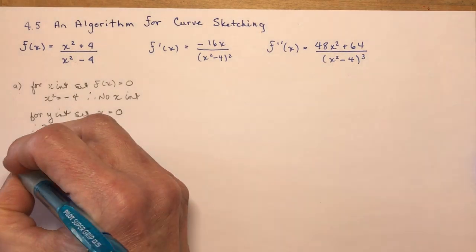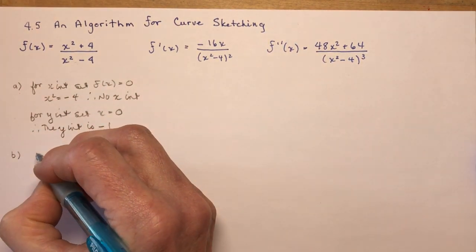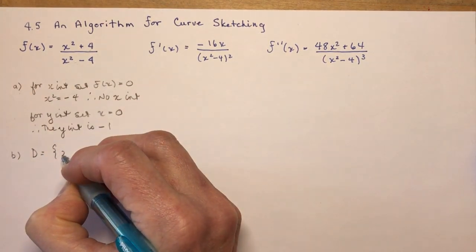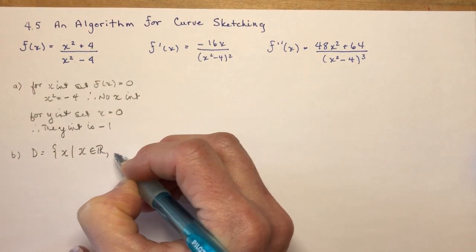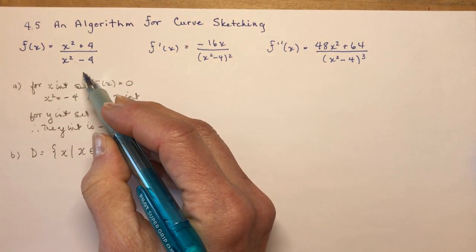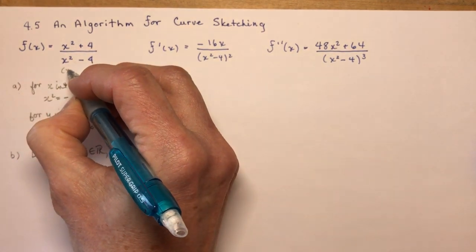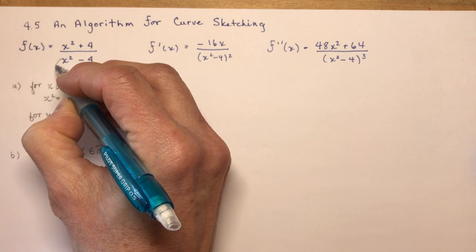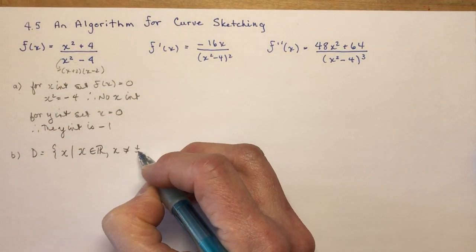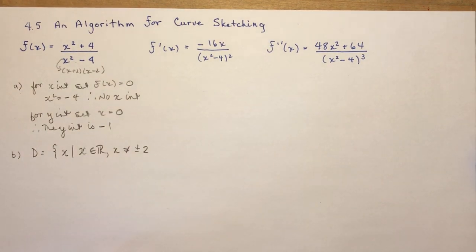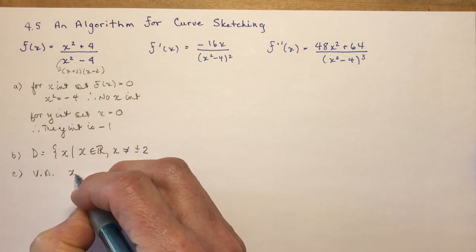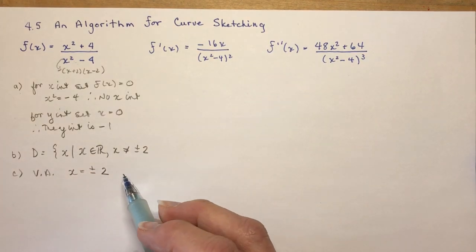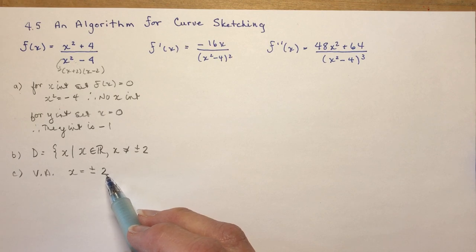For the domain: x is an element of the real numbers, where x is not equal to ±2. The denominator x² − 4 factors as (x+2)(x−2), so we don't want to make it zero. This also implies the vertical asymptotes are x = ±2. Your teacher might ask you to show the limit as you approach 2 from the left and the right — that's quite possible.